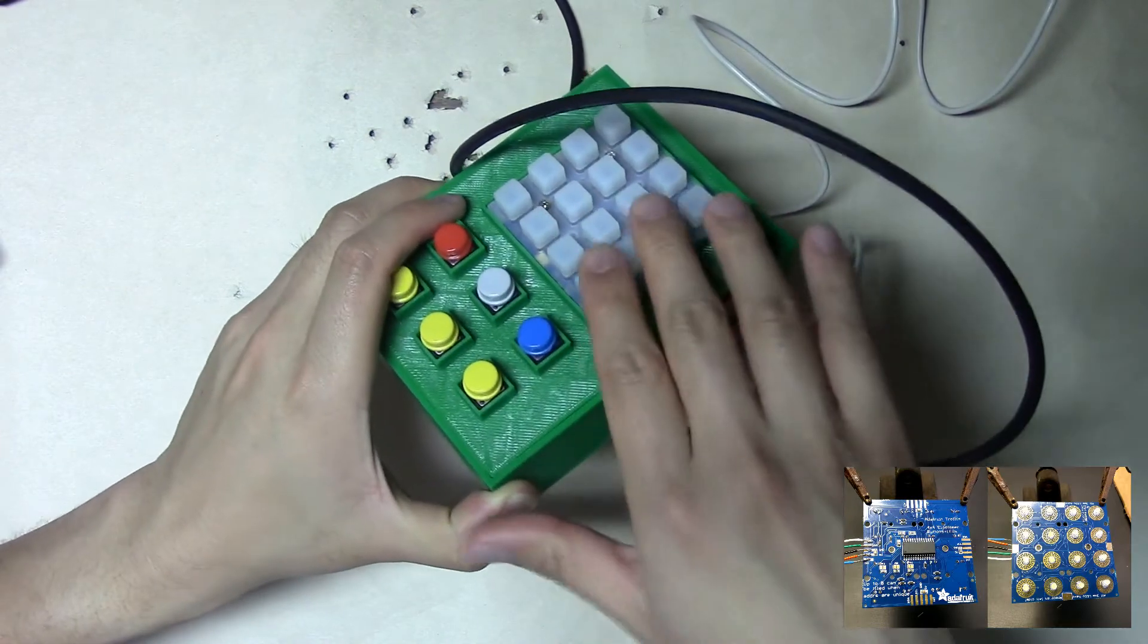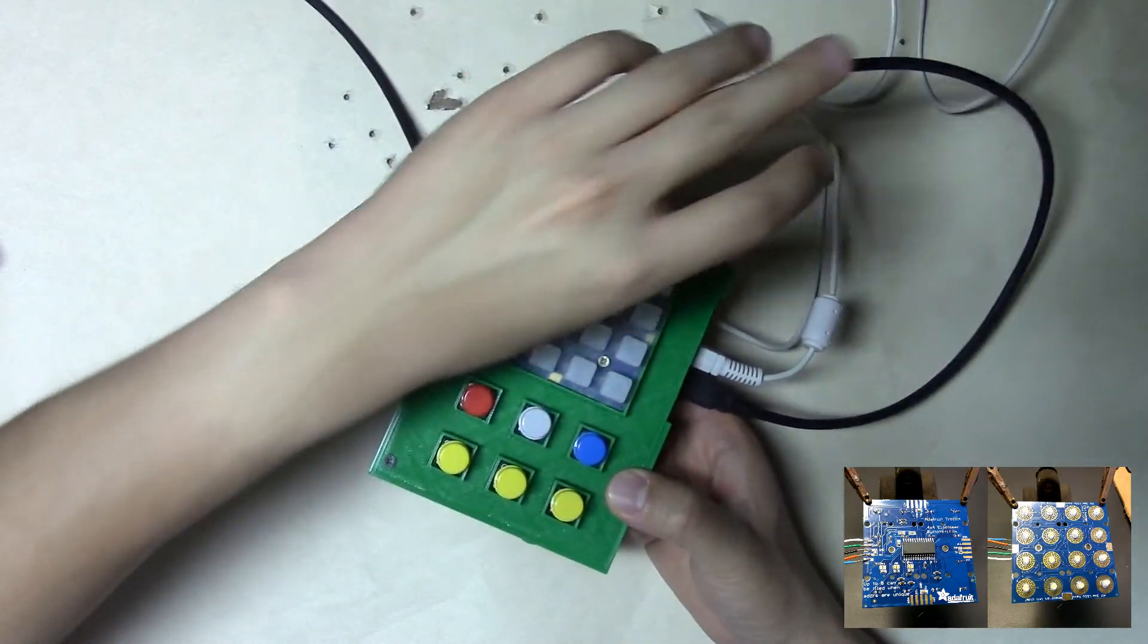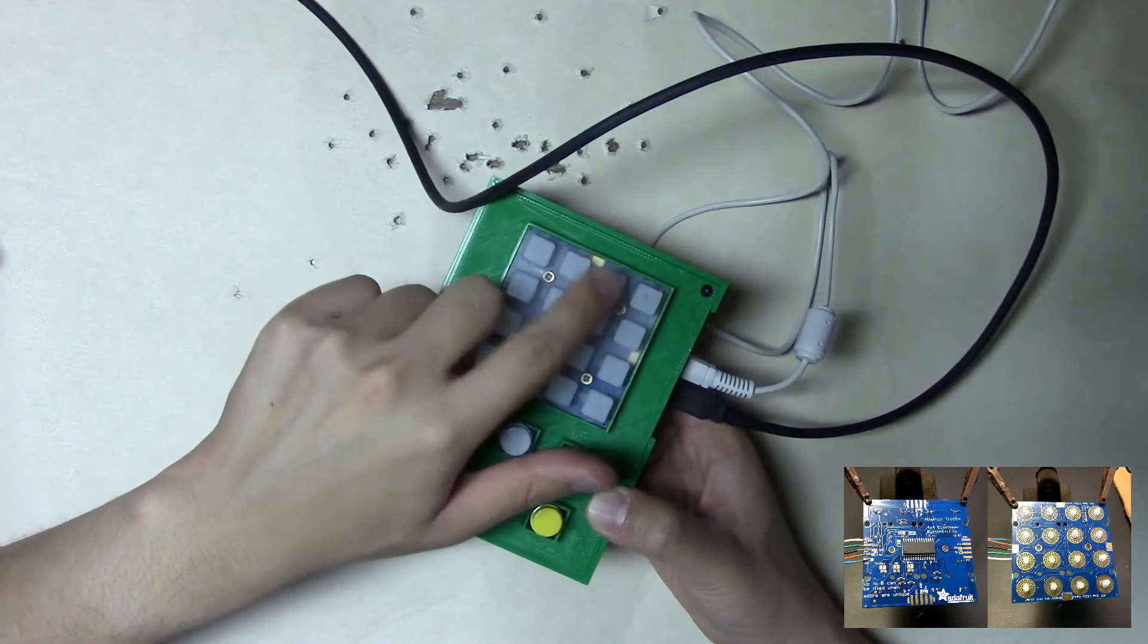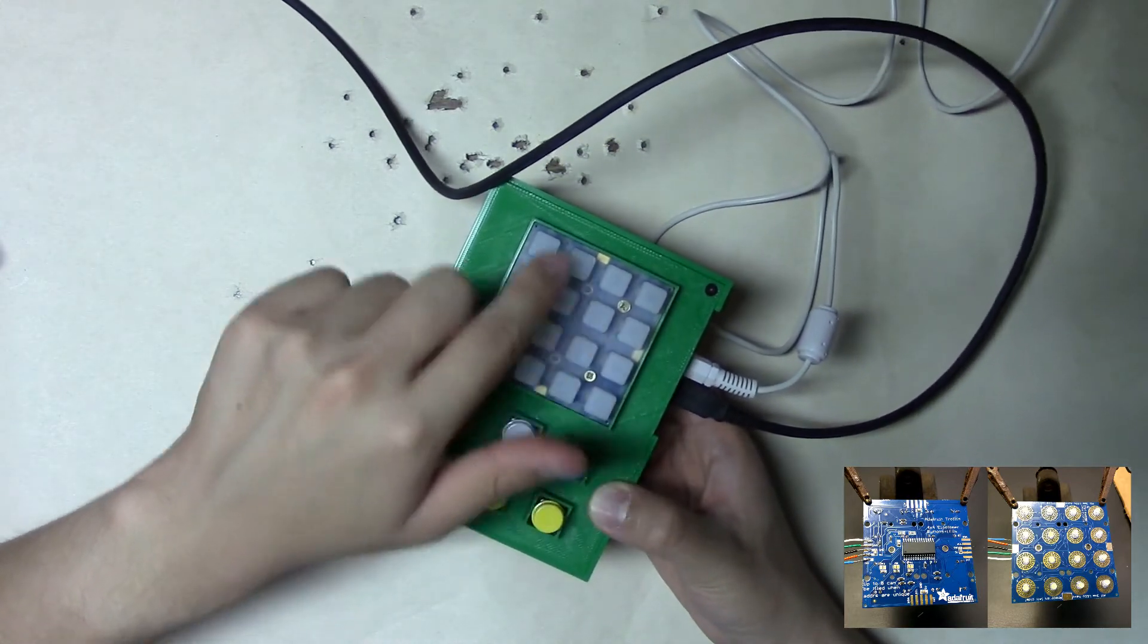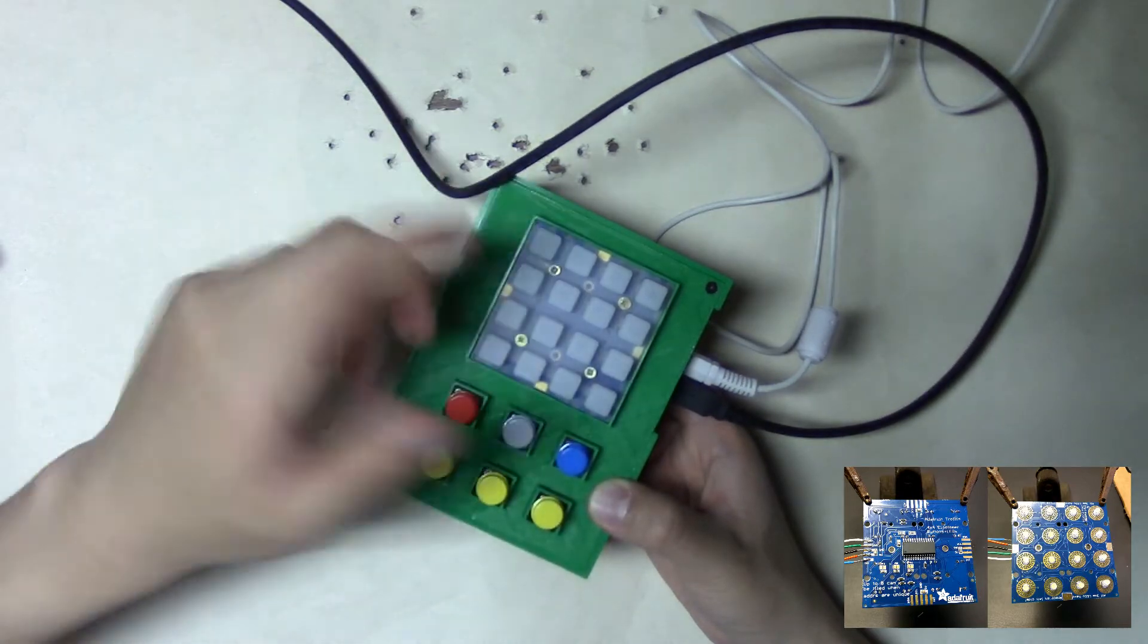And then on top, this is an Adafruit trellis, which has LEDs for every button. You can program them to light up in different ways when you press the buttons and whatnot.